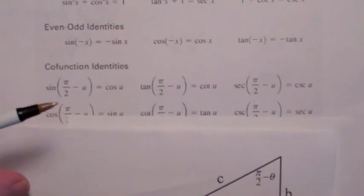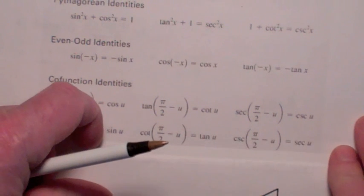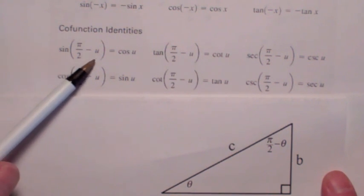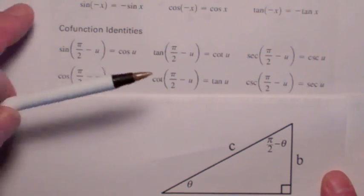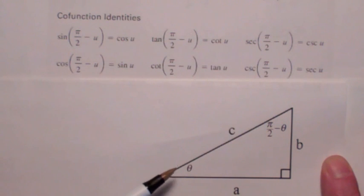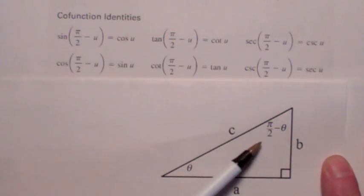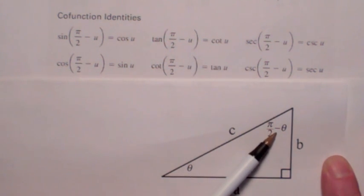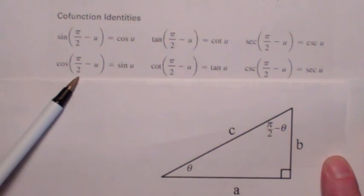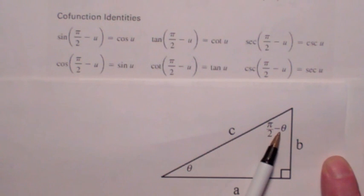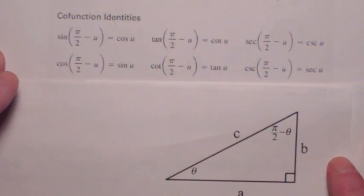For the cofunction identities, a good way to keep those straight is to think about a right triangle. The first one says the sine of the complement of an angle is the cosine of the angle itself. Two angles are complementary if they add up to 90 degrees or pi over 2. For example, the cosine of the complement of theta equals the sine of theta — that would be b over c — and the cosine of the complement would still be b over c.